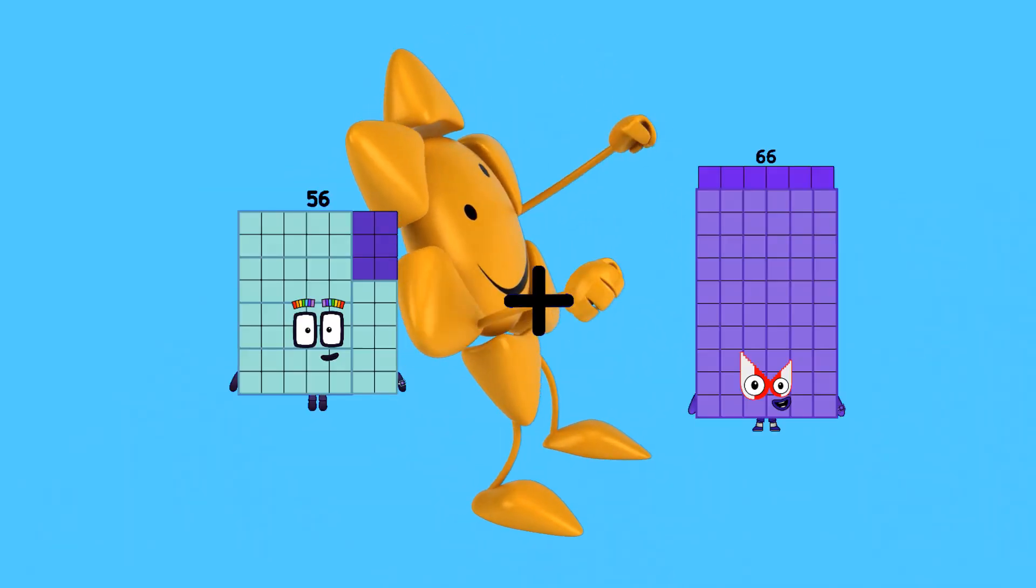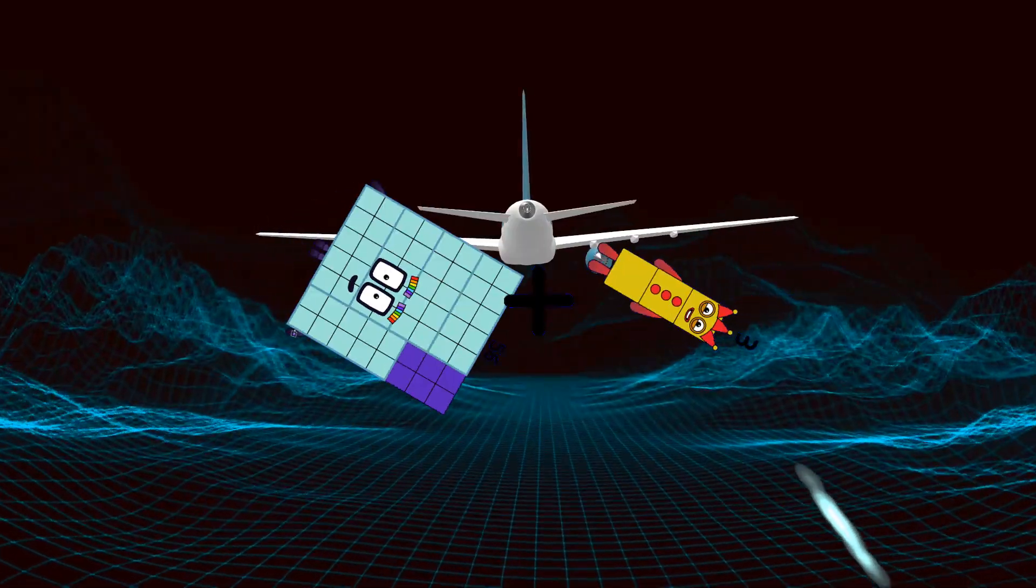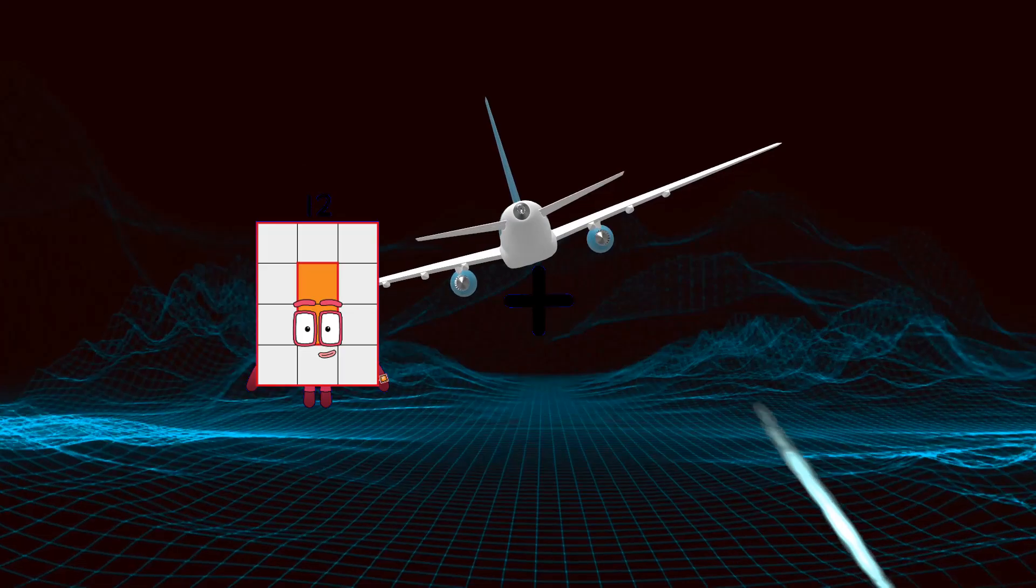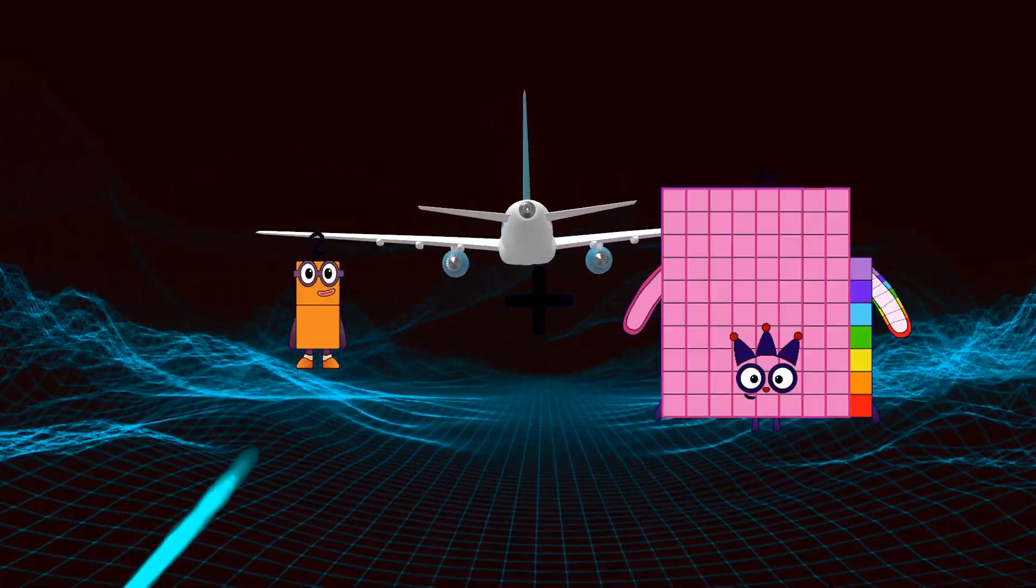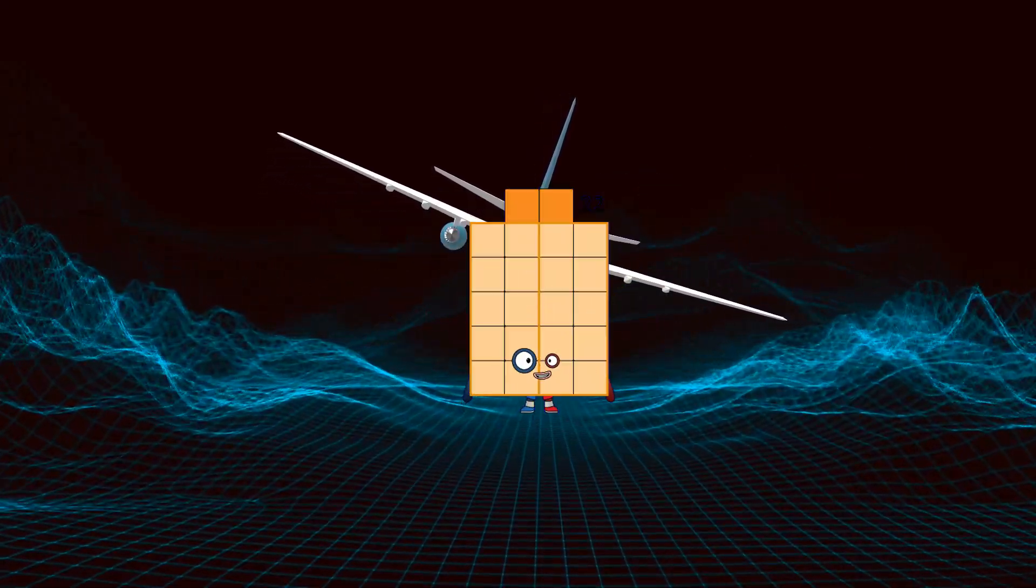56 plus 3 equals 59. 2 plus 20 equals 22.